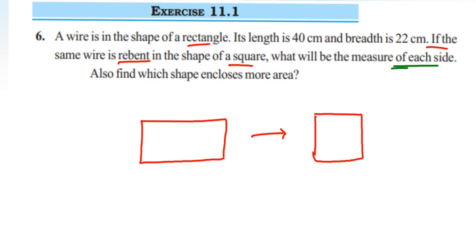The same wire I'm using to make a square. This means the wire length is same. So wire length is nothing but this boundary - this is the perimeter. So perimeter of rectangle and the perimeter of square will be equal.